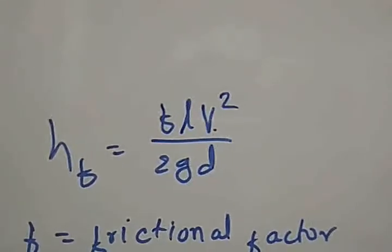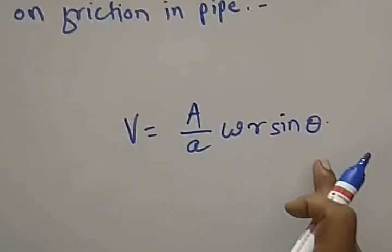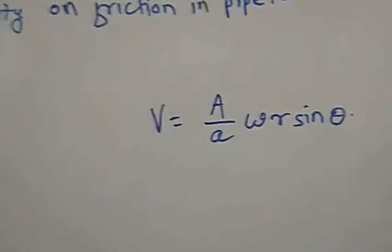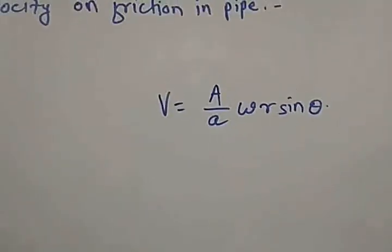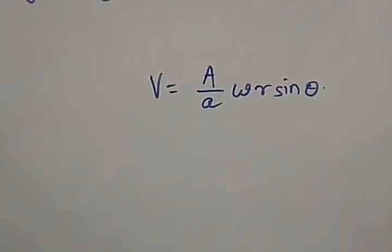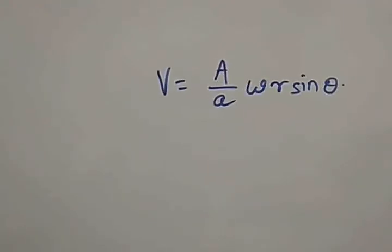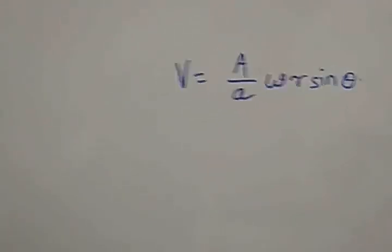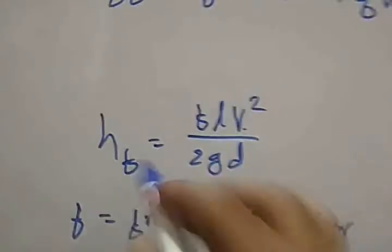We have already derived the equation for velocity: V is equal to (A/a)ωR sinθ, where A is the area of the cylinder and small a is the area of the pipe, ω is the angular velocity of the crank, R is the radius of crank, and θ is the angle turned by the crank from the inner dead center. Now I will put the value of V into the HF equation.